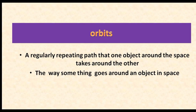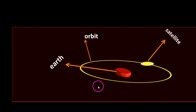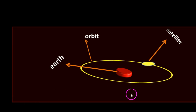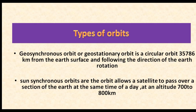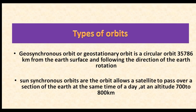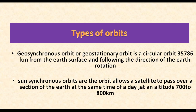An orbit is a regularly repeating path that one object in space takes around another. For example, the way a satellite goes around the Earth is its orbit. There are two main types of orbits: Geosynchronous and Sun-synchronous. Geosynchronous orbit, or geostationary orbit, is a circular orbit 35,786 km from Earth's surface, following the direction of Earth's rotation. Sun-synchronous orbits allow a satellite to pass over a section of Earth at the same time each day, at an altitude of 700 to 800 km.